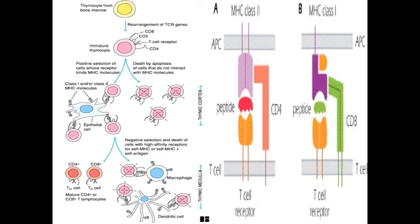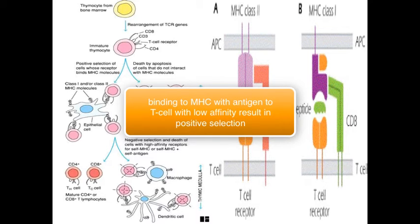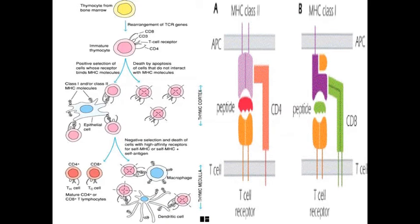But if they would bind with low affinity to the MHC with the antigen, then they will undergo a positive selection and they are good enough to enter our circulation.